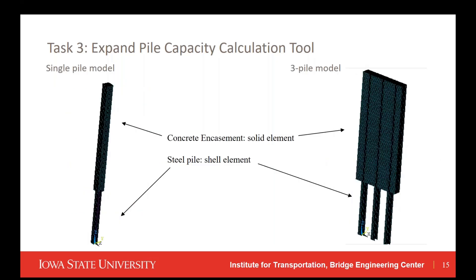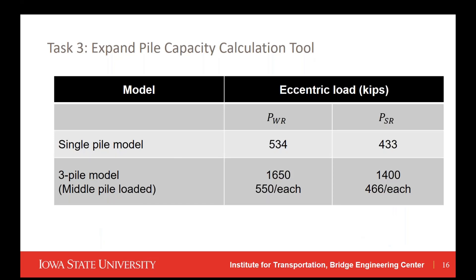Here are the final models for the single pile model and three-pile model. We use solid elements to simulate the concrete encasement and shell elements to model the steel piles. For comparison: in the single pile model with the weak axis restrained, PWR equals 534 kips. In the three-pile model, the PWR for the entire model was 1,650 kips — dividing by three gives approximately 550 kips per pile. For the strong axis restraint, the single pile model gives 433 kips, and the three-pile model gives about 466 kips per pile. The results from the single pile model and three-pile model are very close, so we consider the single pile model validated by the three-pile model.